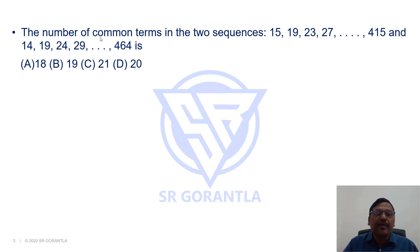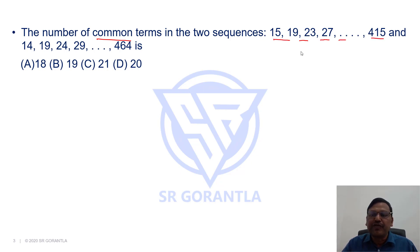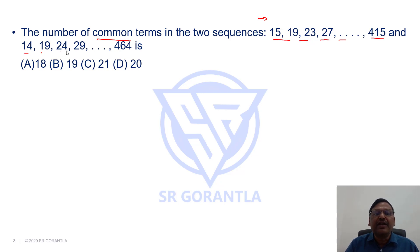The number of common terms in two sequences: the first is 15, 19, 23, and so on till 415. The second one is 14, 19, 24, and so on till 464.